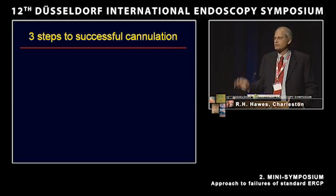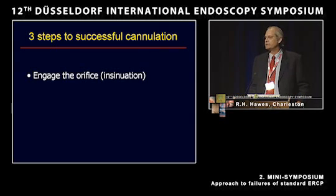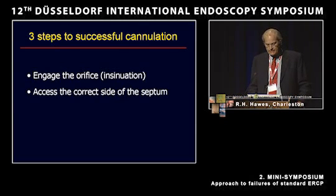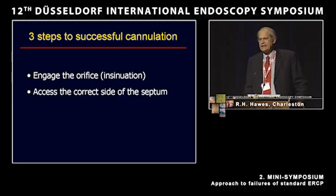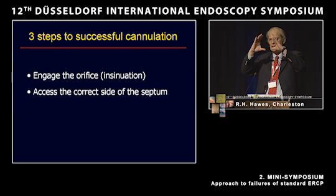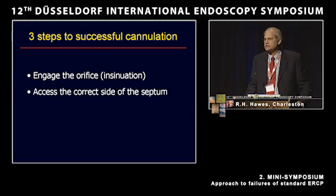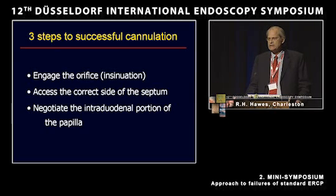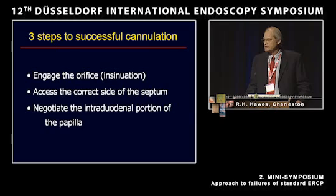I break down cannulation into three separate steps. The first is to engage the orifice — what I call insinuation — basically engaging whatever device you're using into the papillary orifice. The second step is to access the correct side of the septum within the ampullary orifice, either on the biliary side or the pancreatic side. The third part, and oftentimes the most difficult, is negotiating the intraduodenal portion of the papilla to achieve deep cannulation.